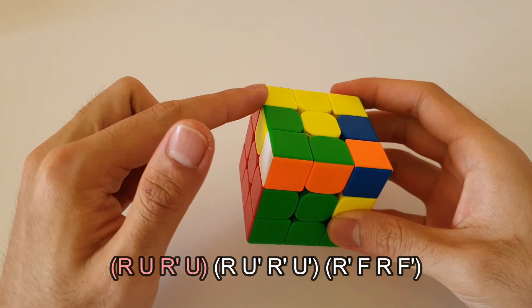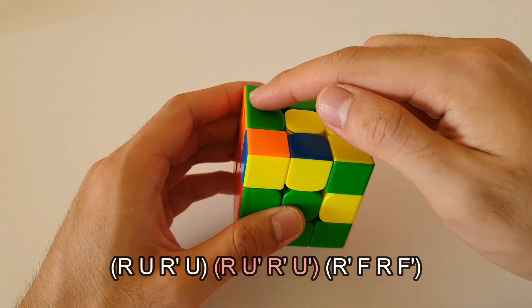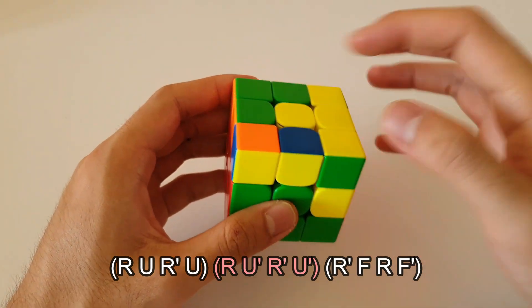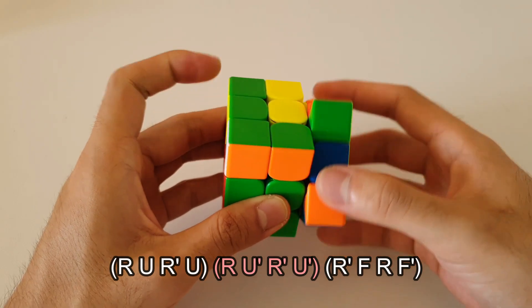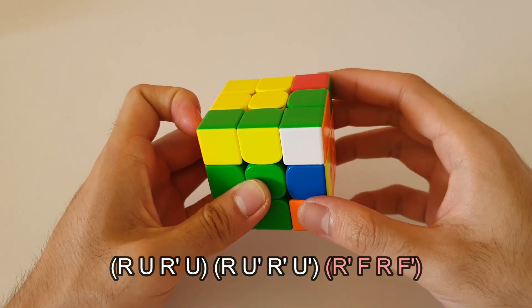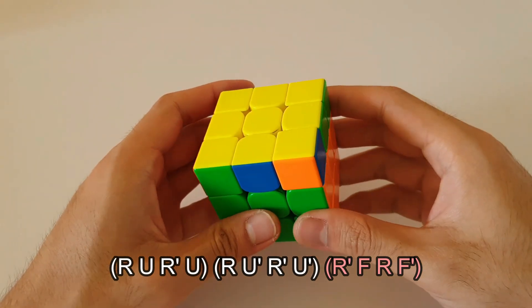You want to now move the F2L pair all the way back around in a way that sets up a sledgehammer. So to do that, we start off like this, move the F2L pair back over and that sets it up into this position where we can go into a sledgehammer and that solves that OLL case.